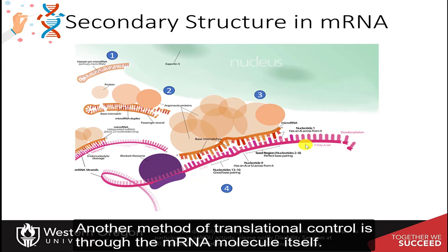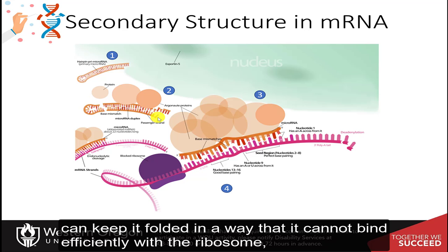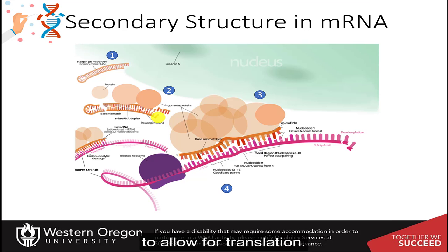Ribosome heterogeneity can add specificity for which messages are more readily translated by the ribosome. Another method of translational control is through the messenger RNA molecule itself. Secondary structure within the messenger RNA can keep it folded in a way that it cannot bind efficiently with the ribosome to allow for translation.